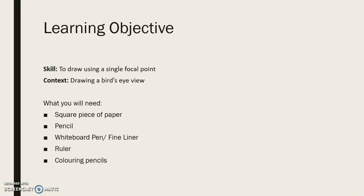So I'll explain that in the next slide. Here's what you need: a square piece of paper — it doesn't have to be square but it does make it a little bit easier. Maybe use a couple of pieces of paper just in case you need to try again. Pencil, whiteboard pen, fineliner, ruler, and some colouring pencils. Also make sure you have a rubber just in case you have to rub out any mistakes.